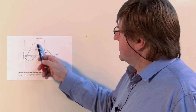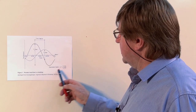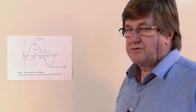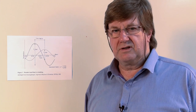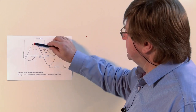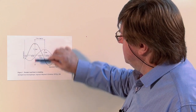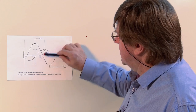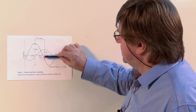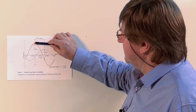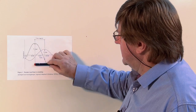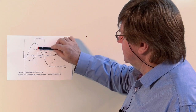The decrement factor is derived for various wall configurations. It's based on the maximum and the minimum between the outside and the inside — Ti over To.